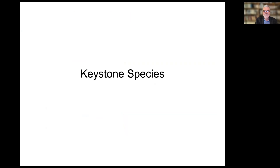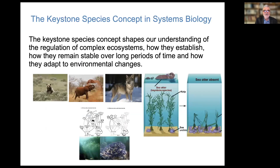Most people have heard about keystone species in different environments — like the grizzly bear, the elephants, the wolf — all in their own unique context. The classification of a keystone species does not carry over from one environment to another.